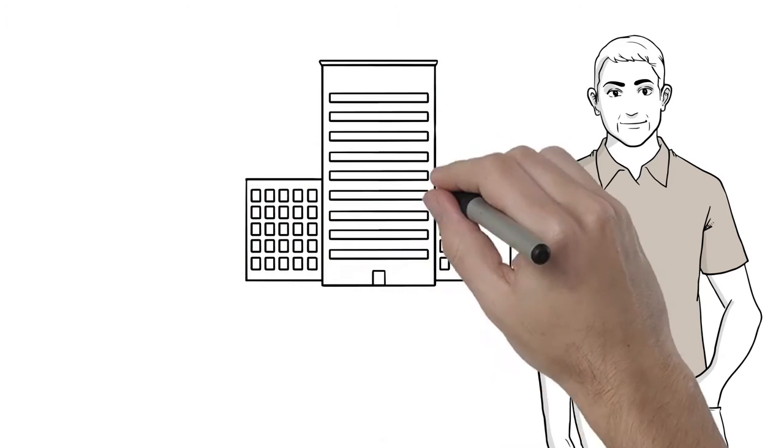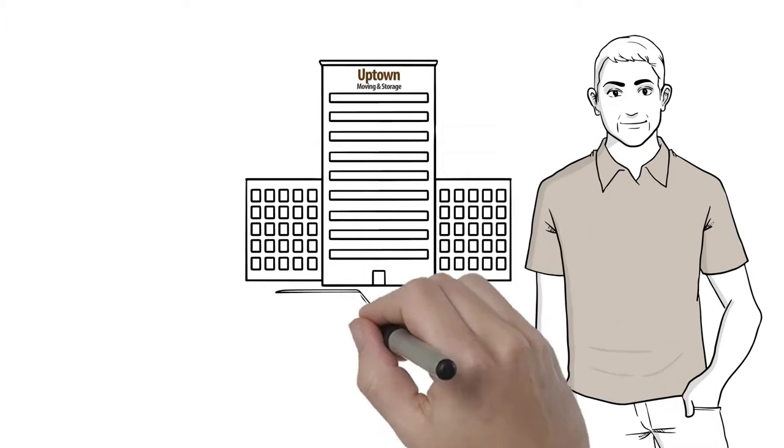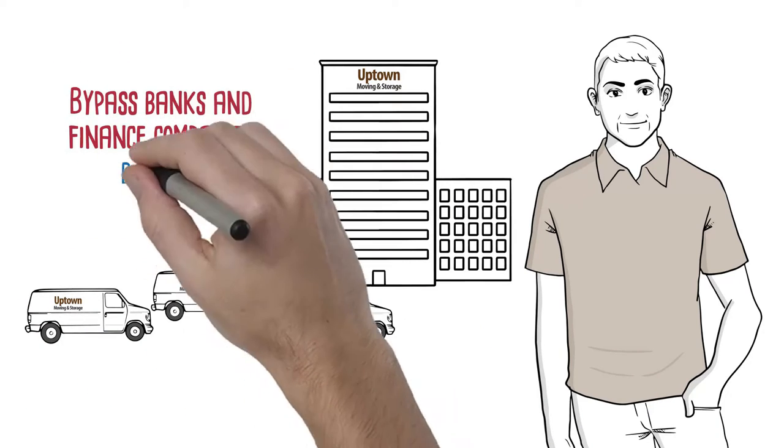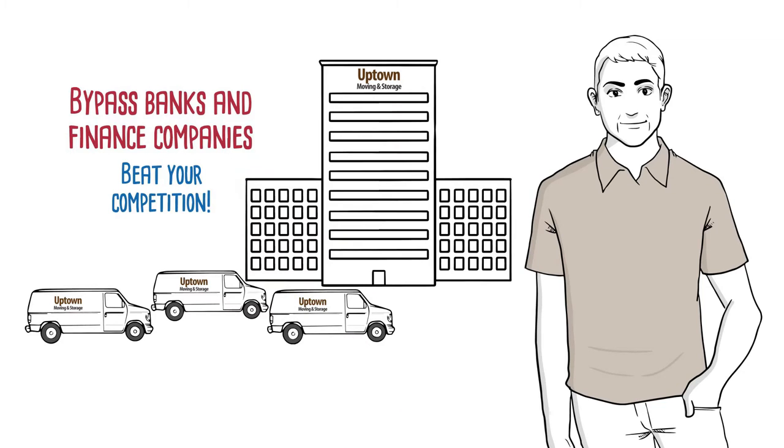Kevin learned how to bypass banks and finance companies and become his own source of financing for business vehicles, equipment, office buildings, and more. And now Kevin can afford the equipment that puts him ahead of his competition.